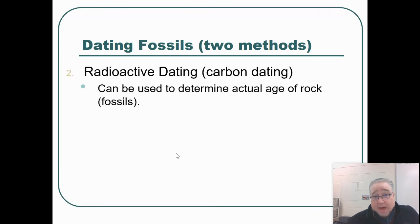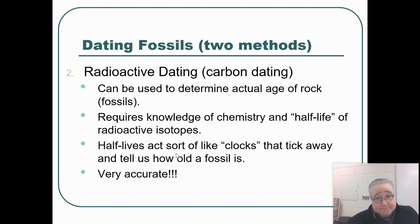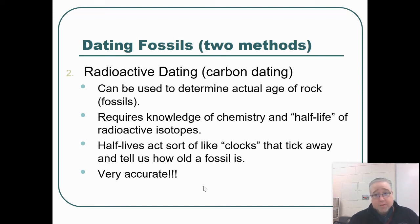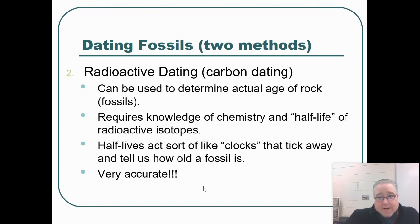The other type of dating is called radioactive dating, and it is a lot more accurate. We use chemistry techniques — which you'll learn about next year in chemistry — specifically the half-lives of elements and radioactive isotopes to determine the age of rocks and the fossils within them. This dating method is extremely accurate. When they say a fossil is 5.2 million years old based on radioactive dating, that fossil is most likely right around that age, give or take maybe a couple hundred years. Carbon dating, also known as radioactive dating, is much more accurate than relative dating.